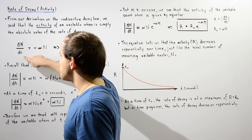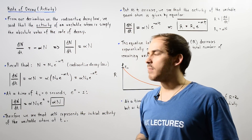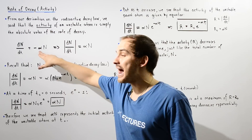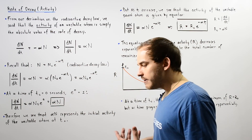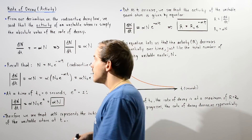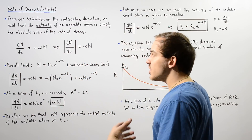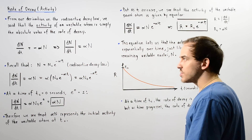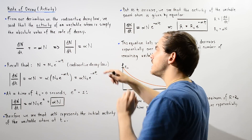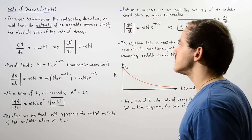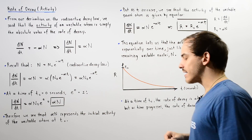The rate of change, our derivative, is equal to negative alpha multiplied by n, where alpha is our decay constant. So if we take the absolute value of both sides so that we only deal with a positive number, we get our activity of our unstable atom.